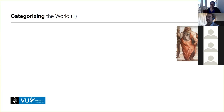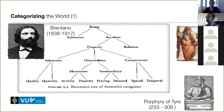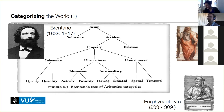The history of philosophy is full of figures trying to concretize or go deeper into the classification of all things. Brentano went into the classification of what Aristotle called accident — what we might know now as properties or attributes of things. Porphyry of Tyre did the same with what Aristotle calls substance — entities, so to speak.